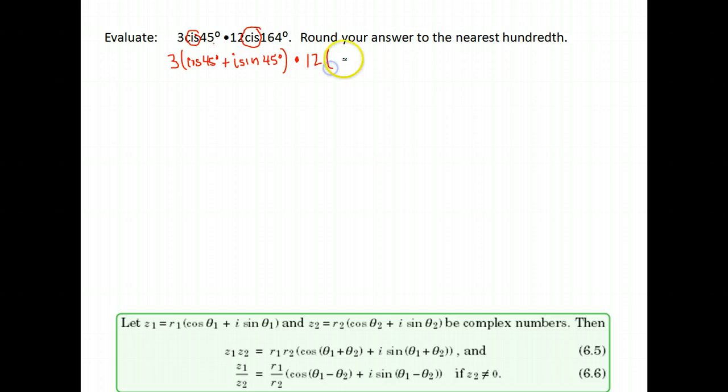We're multiplying that by 12 cosine 164 plus i sine 164. They're asking me to round my answer to the nearest hundredth, which means this probably won't be an angle that has an exact value that we've memorized.